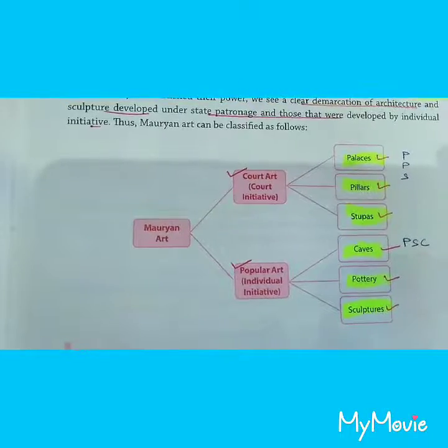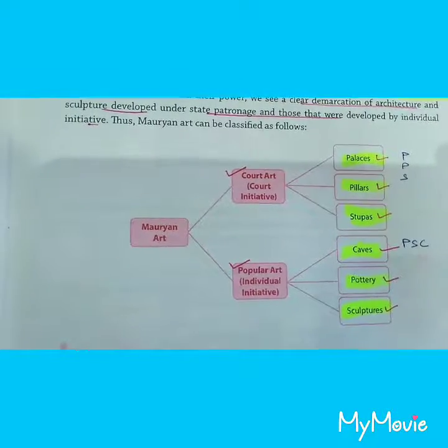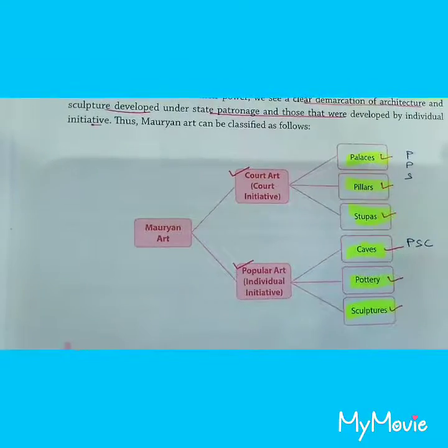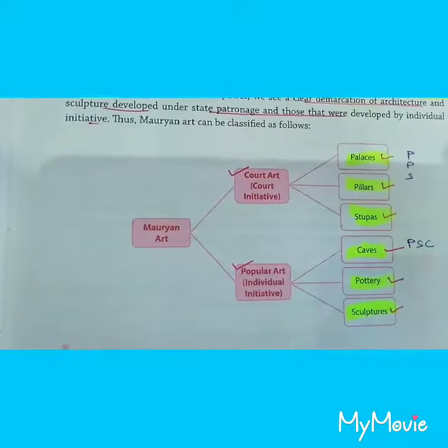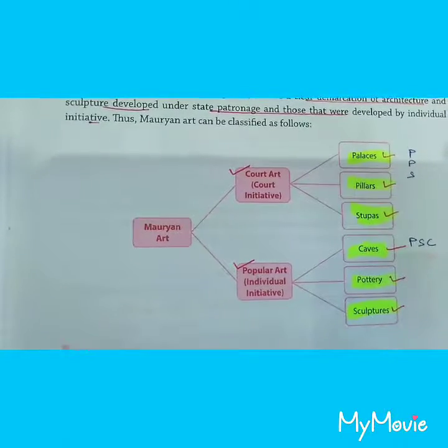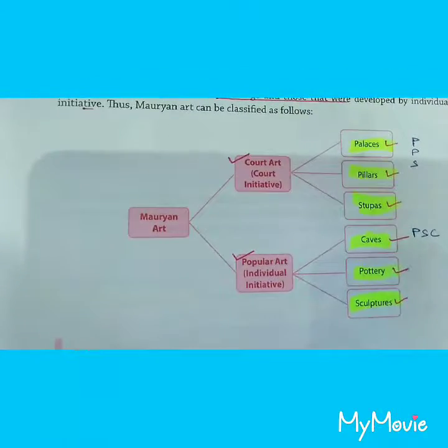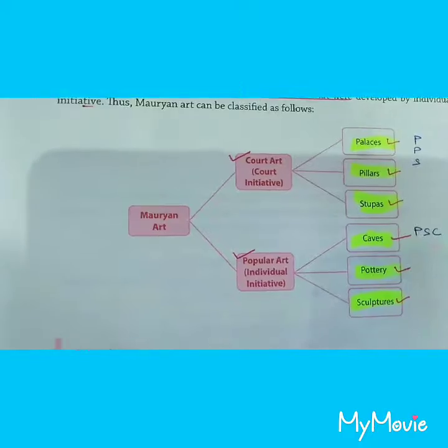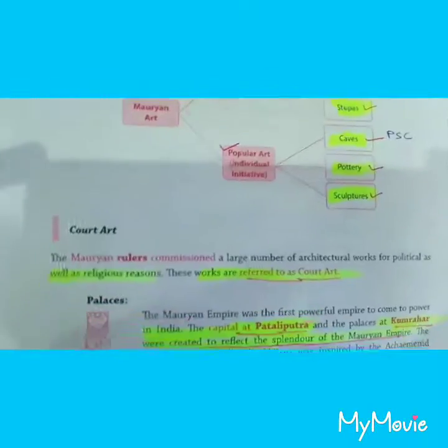As far as Mauryan art is concerned, we classify it into court art and popular art. In court art we see palaces, pillars, and stupas. In popular art we see caves, pottery, and sculpture.